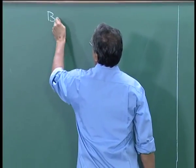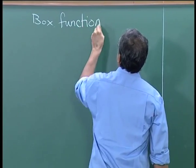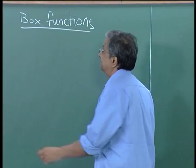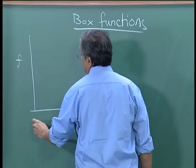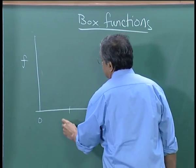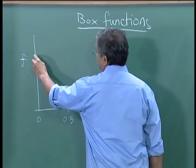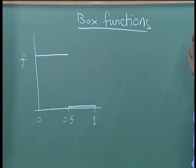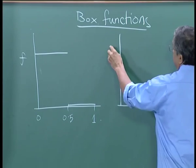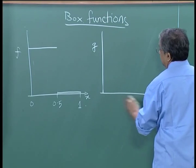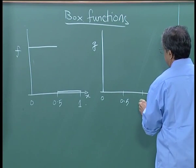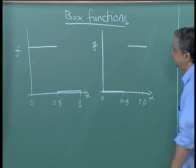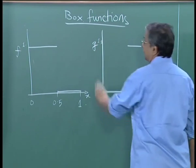Today I am going to talk about box functions — a special class of functions. I am going to define two functions to start with. One is a function f, defined on the interval [0, 1]. The value of f on [0, 0.5] is 1 and outside that it is 0. I define another function g, also on [0, 1]: its value on [0, 0.5] is 0 and between 0.5 and 1 it is 1.